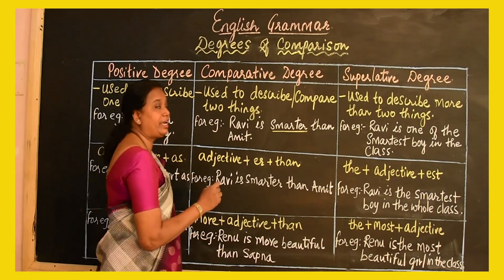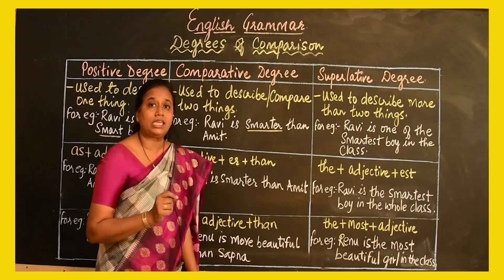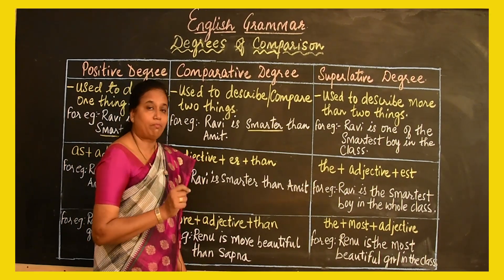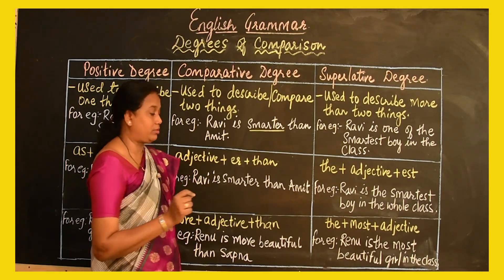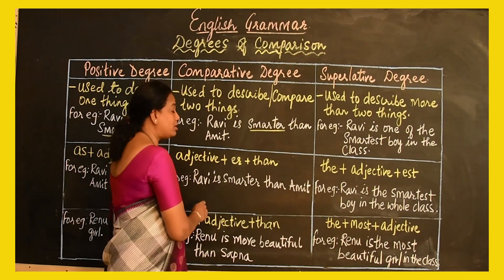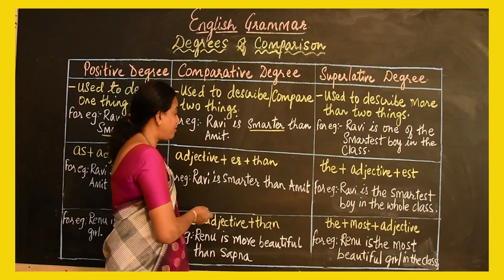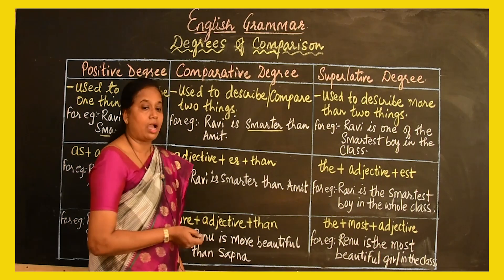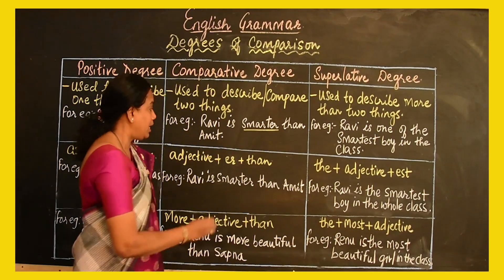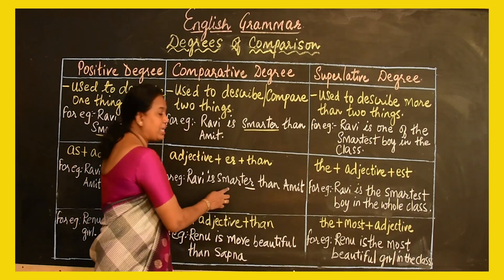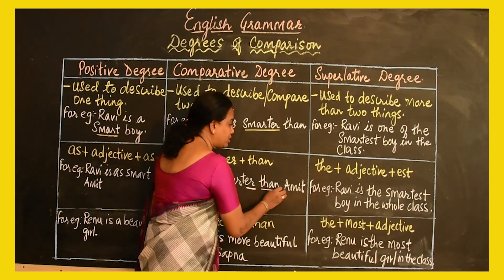In the comparative degree, we take the adjective and add 'er' to it, plus we add the word 'than,' which is the most important thing. So in the comparative degree, we say 'Ravi is smarter than Amit.' Here we are adding 'er' to the adjective 'smart' and adding the word 'than.'